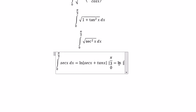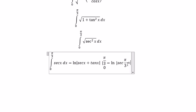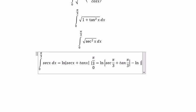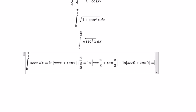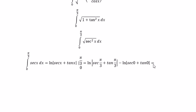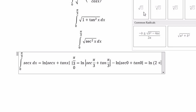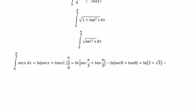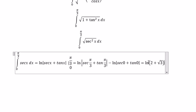Now we substitute the numbers in. This gives us ln(2 + √3) minus ln(1). Since ln(1) equals 0, we don't need to write it anymore, and ln(2 + √3) is the final answer.